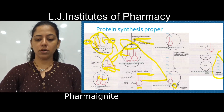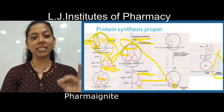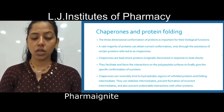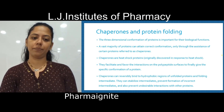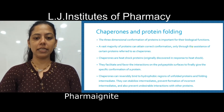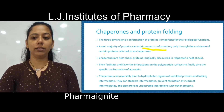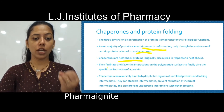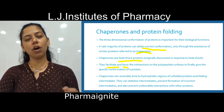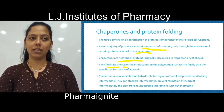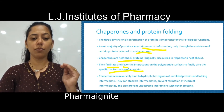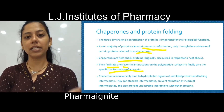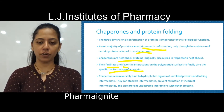The growing peptide is inactive. As we know, proteins have four structures — primary, secondary, tertiary, and quaternary. Tertiary and quaternary structures have three-dimensional conformation. This is our fourth step: protein folding. A majority of proteins can attain a correct conformation only through a certain protein known as a chaperone. Chaperone is a heat shock protein which facilitates and favors the interaction of the polypeptide surfaces, ultimately giving a specific conformation of the protein — converting the synthesized polypeptide into its proper 3D arrangement.